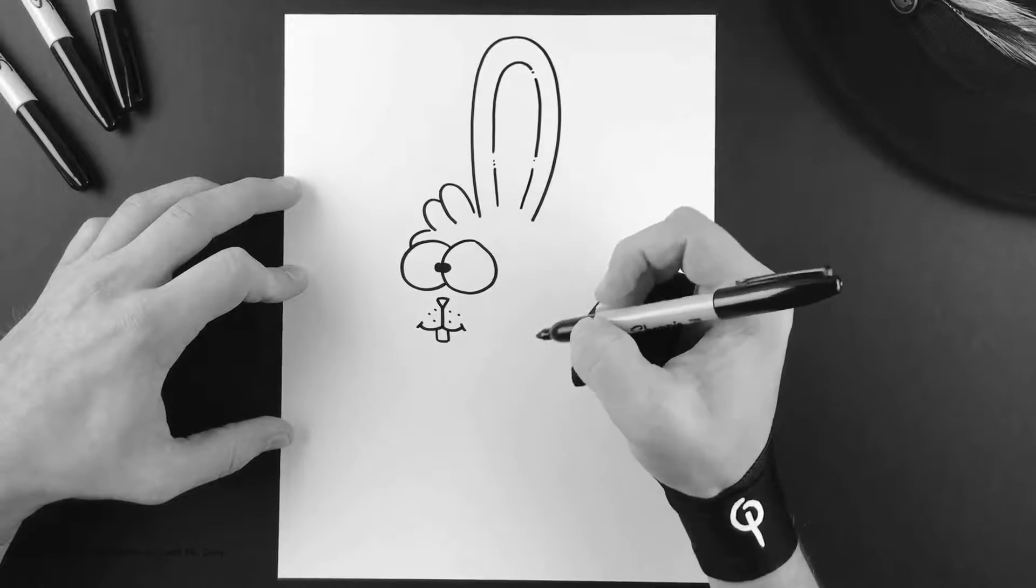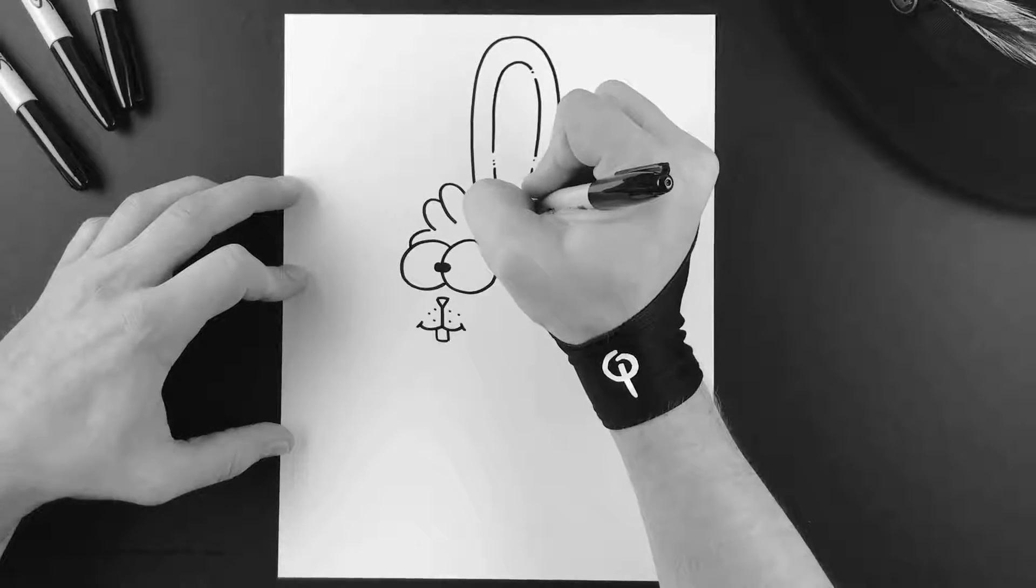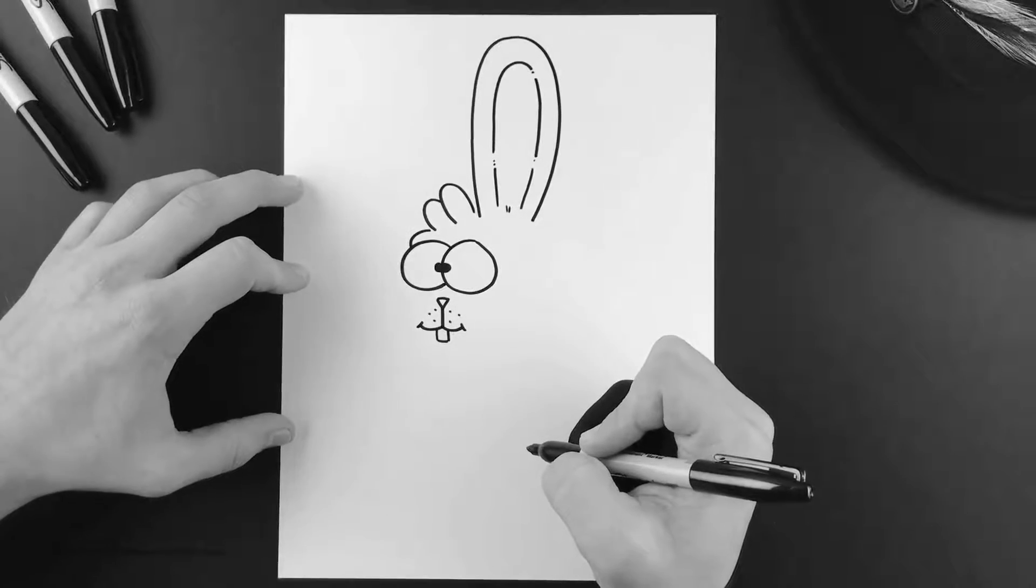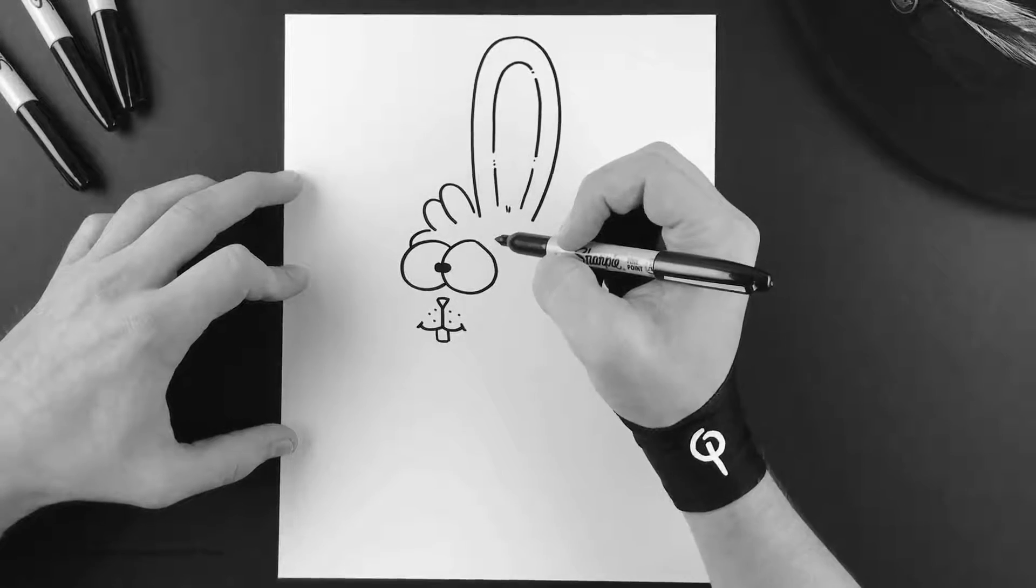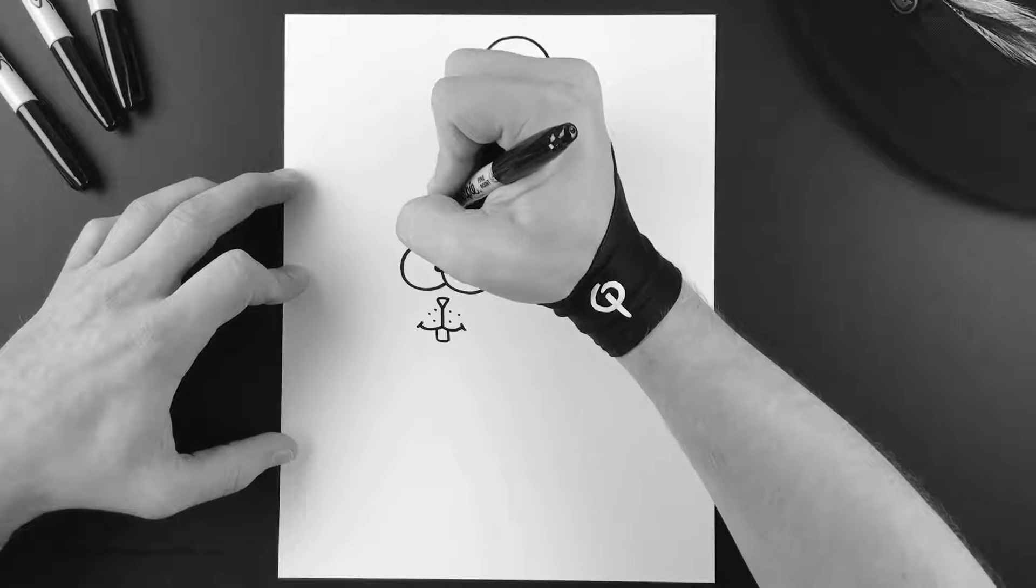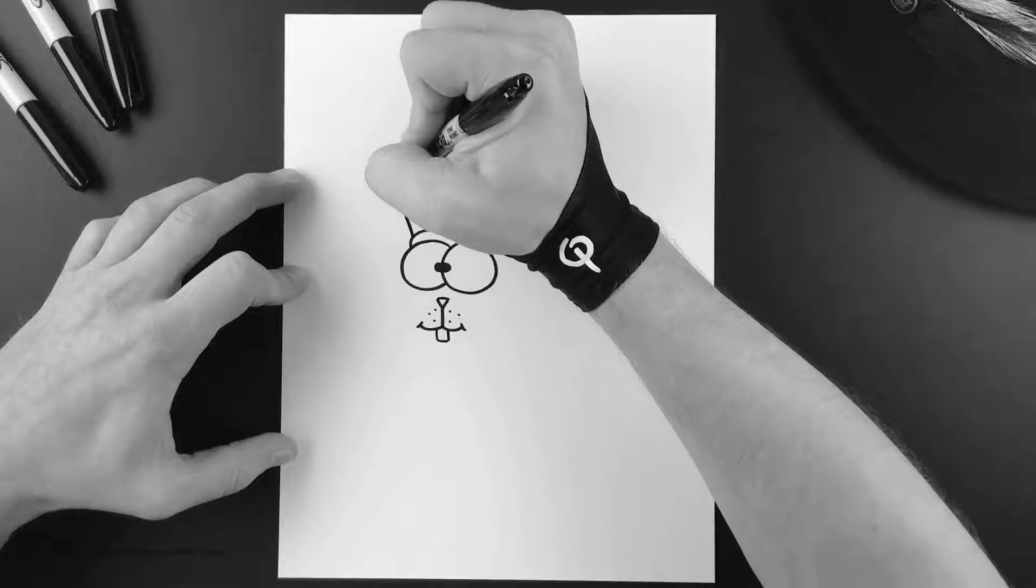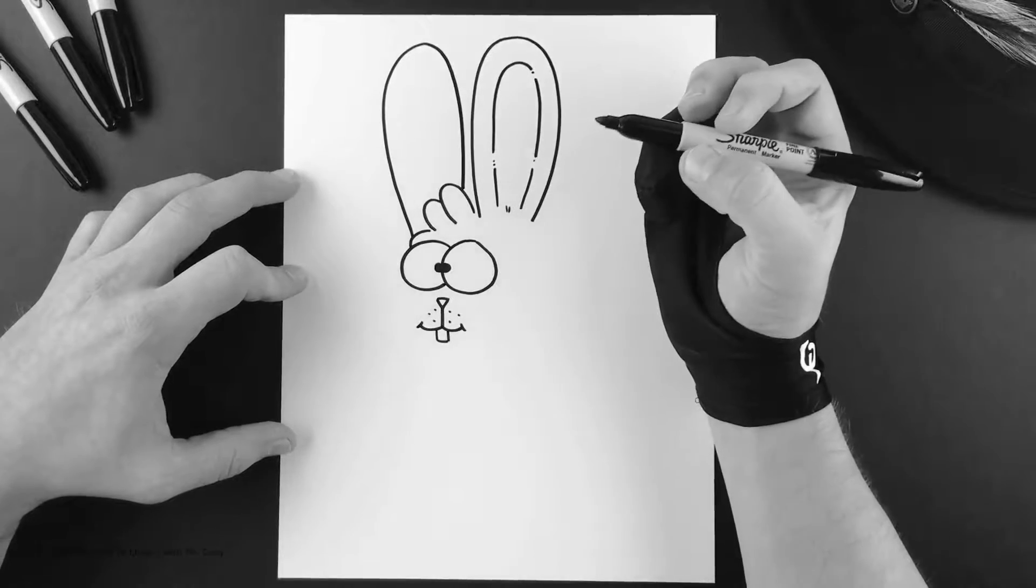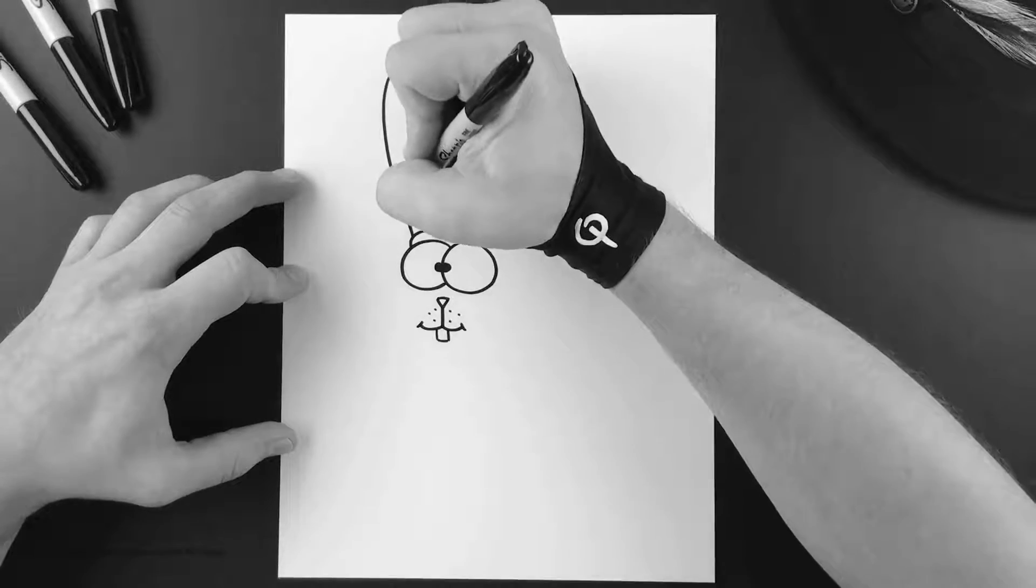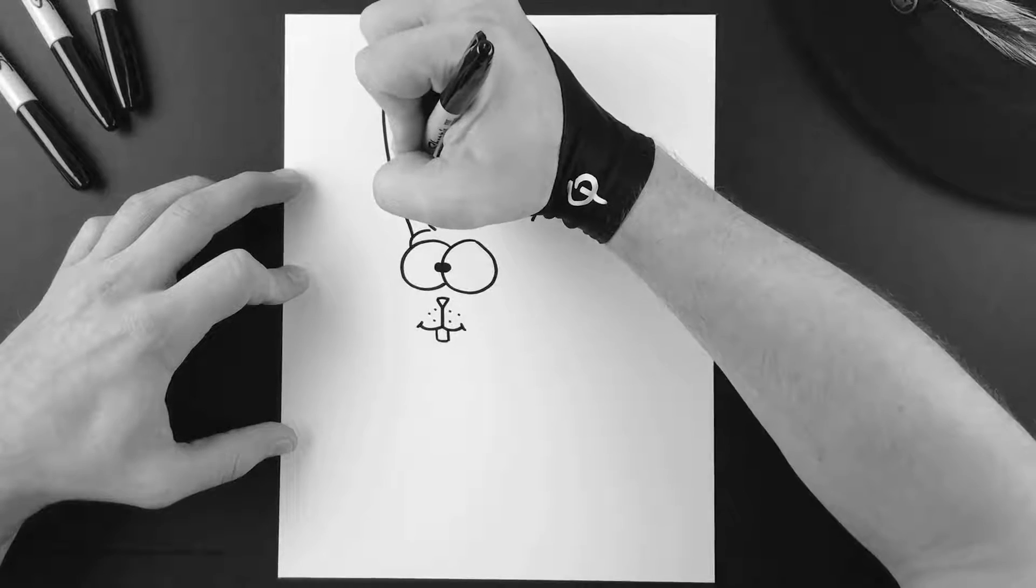Just like that. You can even add little lines like that at the bottom. Now of course what kind of bunny would he be without his other ear? Go ahead and do the same thing just like that, and then put the inside of his ear.